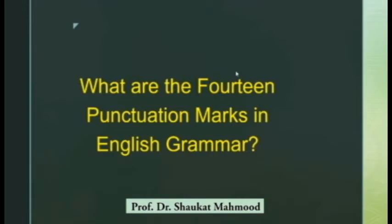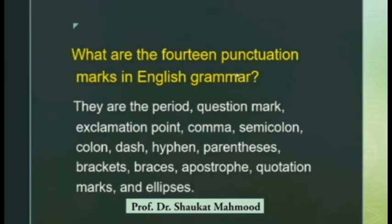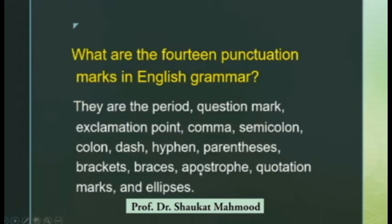Let's see what are the 14 punctuation marks in English grammar. They are: period (full stop in British English), question mark, exclamation point, comma, semicolon, colon, dash, hyphen, parenthesis, brackets, braces, apostrophe, quotation marks, and ellipses. These are the only 14 magical marks which are used in English.